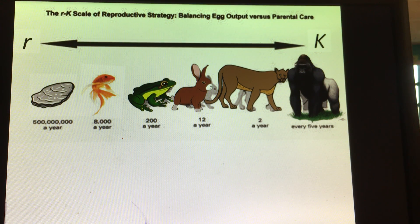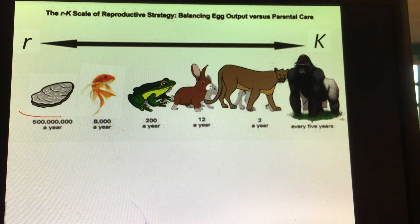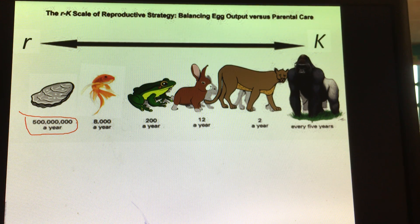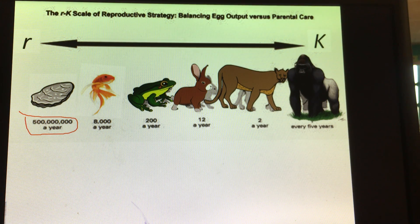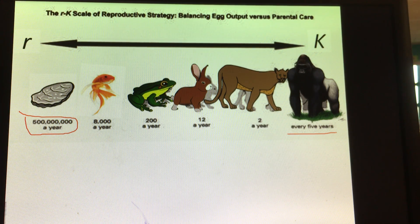R-selected species have a whole bunch of babies with the hopes that a few survive. Oysters, for example, have 500 million offspring per year with the hopes that a few of them survive. Frogs produce about 200 per year — chances are a few will make it to adulthood. Whereas K-selected species, like gorillas, have few offspring with high parental involvement, which ensures their survival.